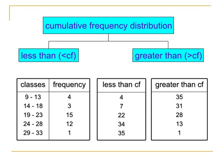The greater than cumulative frequency is the opposite of the less than cumulative frequency — it counts the number of observations greater than the lower limit. For 9 to 13, observations greater than 9 equals the total, which is 35. For 14 to 18, there are 31, because we subtract the 4 observations in 9 to 13 from 35. Continuing this process, for 29 to 33, only 1 observation is counted, since only 1 observation falls in that interval.